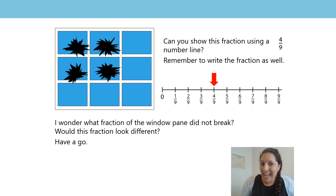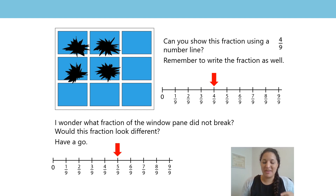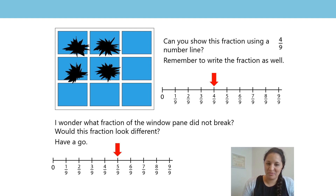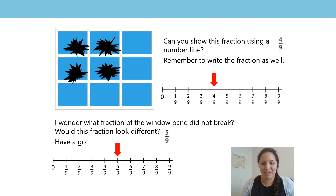Now, if you had a go at the extra bit, you were asked what fraction of the window pane did not break. Well, your number line would look the same, but this time the arrow would be pointing to five ninths, because five of the window panes were not broken. You would write this as five ninths. Well done if you managed to draw both of those number lines, have the arrows pointing at the correct place, and write the correct fraction.